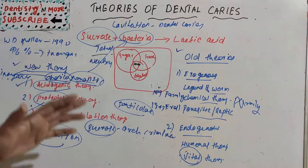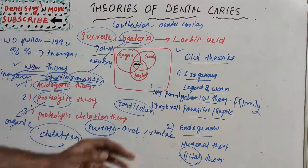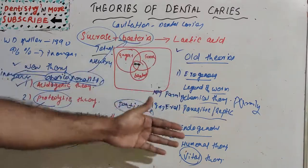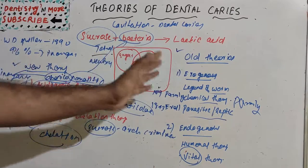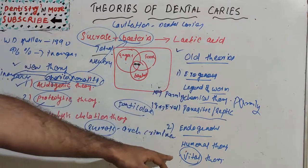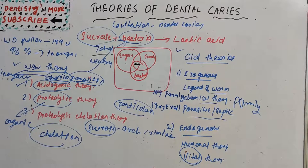That's all about the theories of dental caries. We have learned in detail about the old theories and the newer theories — almost eight theories total. Exogenous and endogenous theories and newer theories: legend of worm, chemical, parasitic, humoral, vital theory, acidogenic, proteolytic theory, and proteolysis chelation theory. Hope you understood the concept of theories of dental caries.